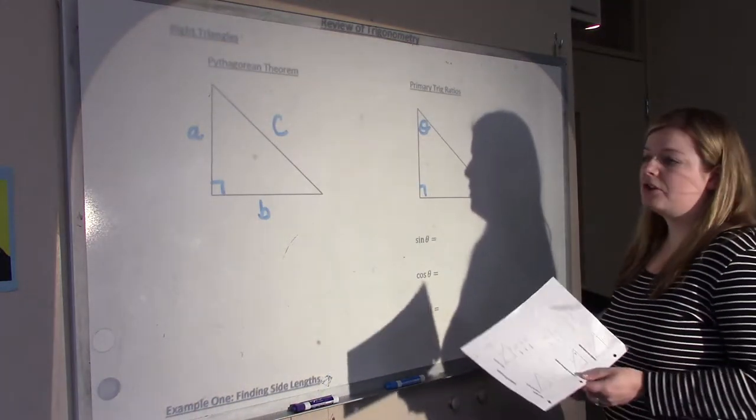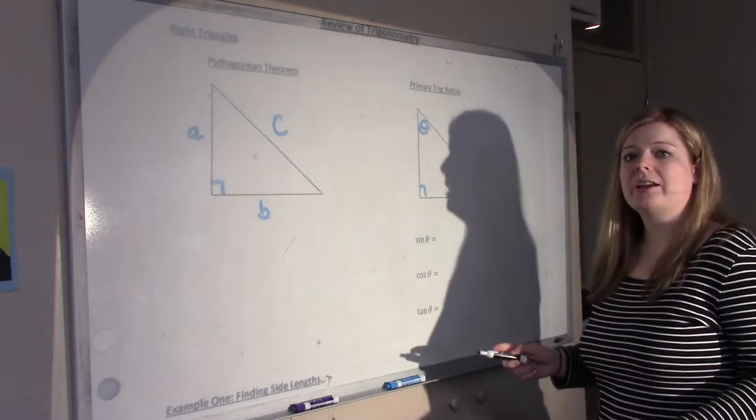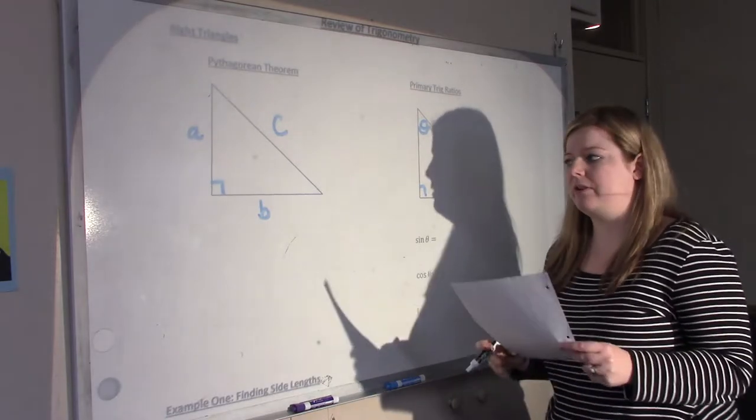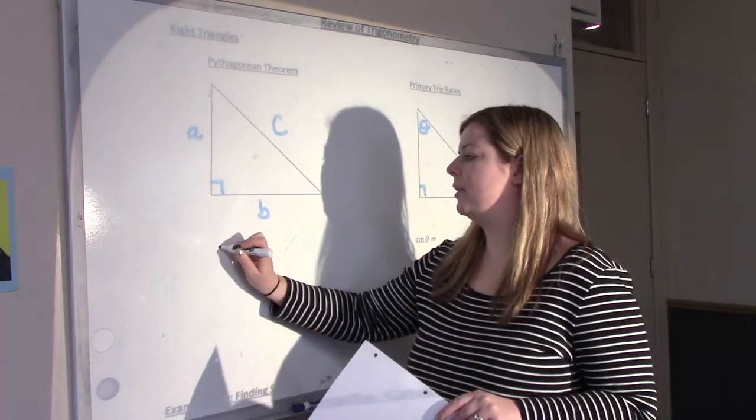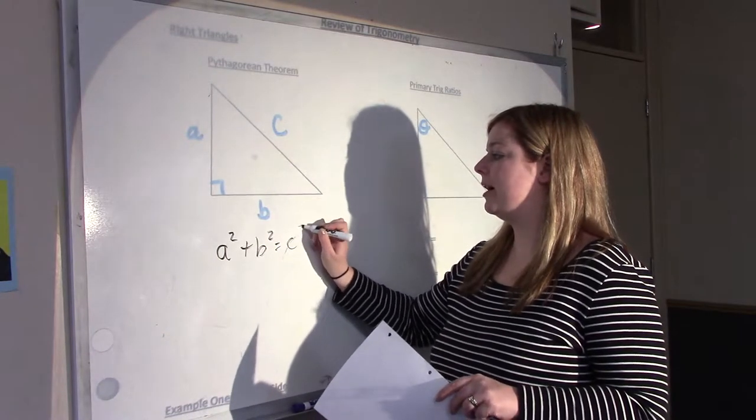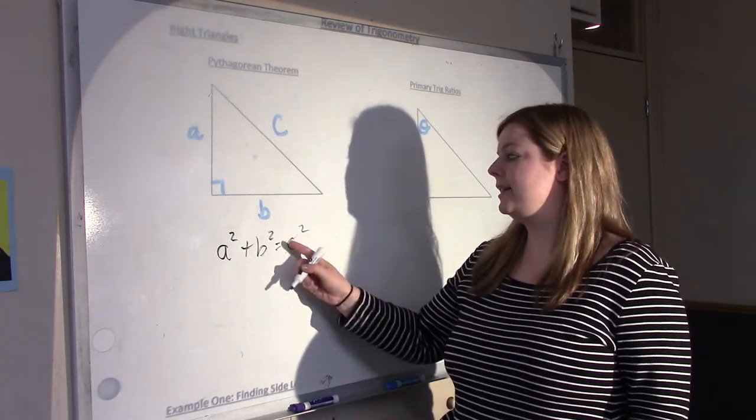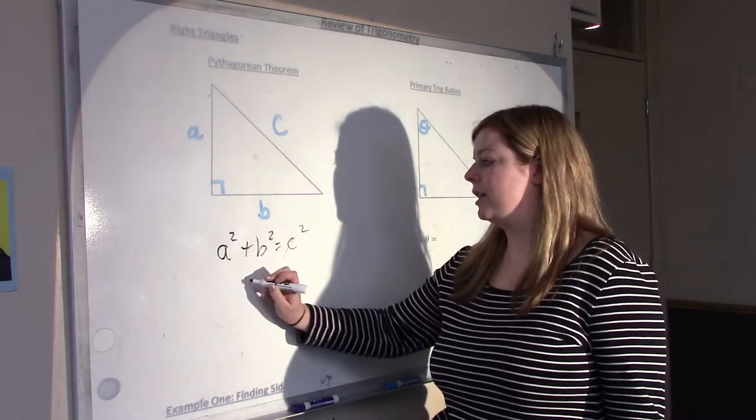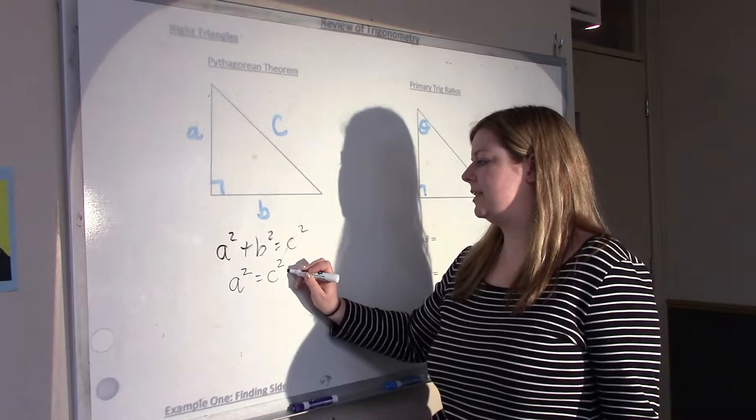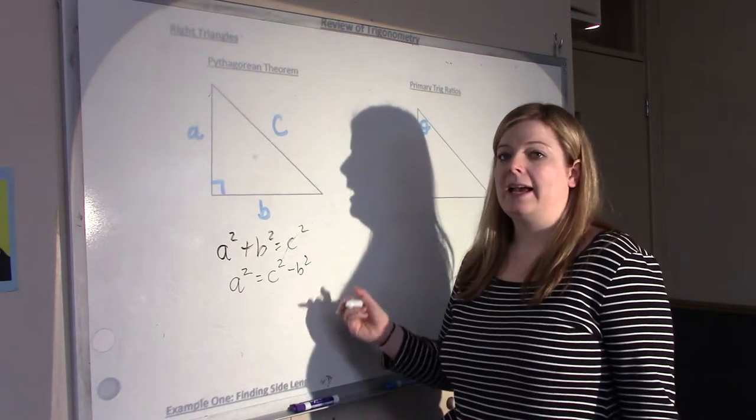So let's first start with right triangles. With right triangles, there's two important parts: Pythagorean theorem and the primary trig ratio. So we of course have A squared plus B squared equals C squared, which gives you the Pythagorean theorem. C always being the hypotenuse. Also, if you're trying to solve for something like A, then that would be rearranged to C squared minus B squared.